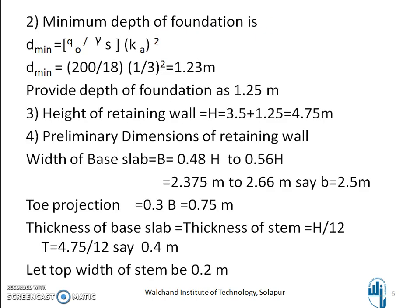The minimum depth of foundation is given by D_minimum = Q_naught / (γ × Ka²), which works out to be 1.23 meters. Let us provide a depth of foundation of 1.25 meters. The total height of the retaining wall H = height of earth fill + minimum depth of foundation = 3.5 + 1.25 = 4.75 meters.